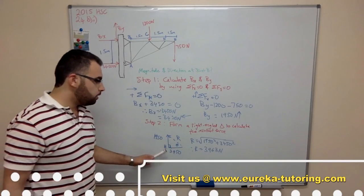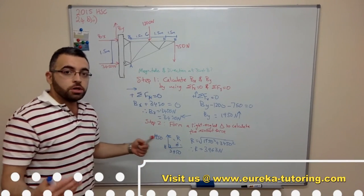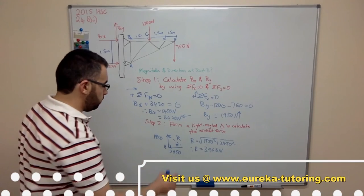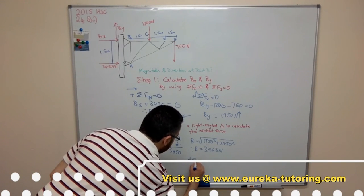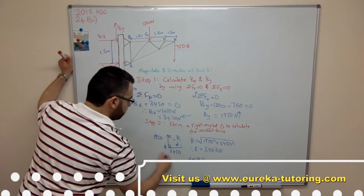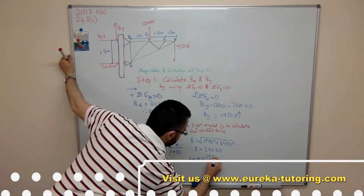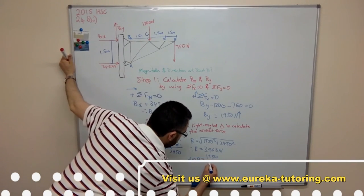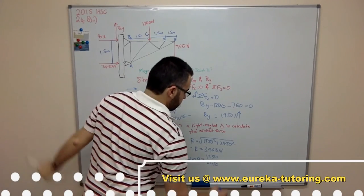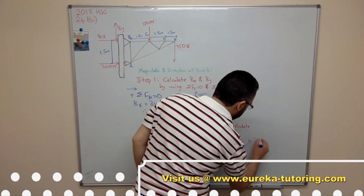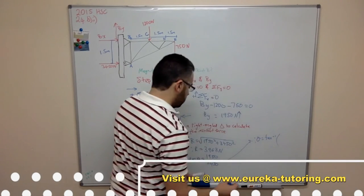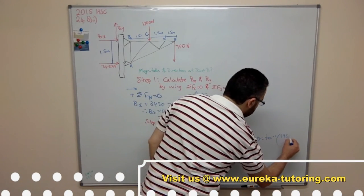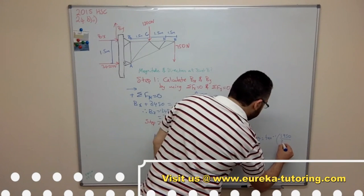So we know that this is opposite. This is adjacent. Opposite on adjacent is tan. So therefore, tan theta equals opposite, 1950, on the adjacent, 3450. Therefore theta equals inverse tan of 1950 on 3450.